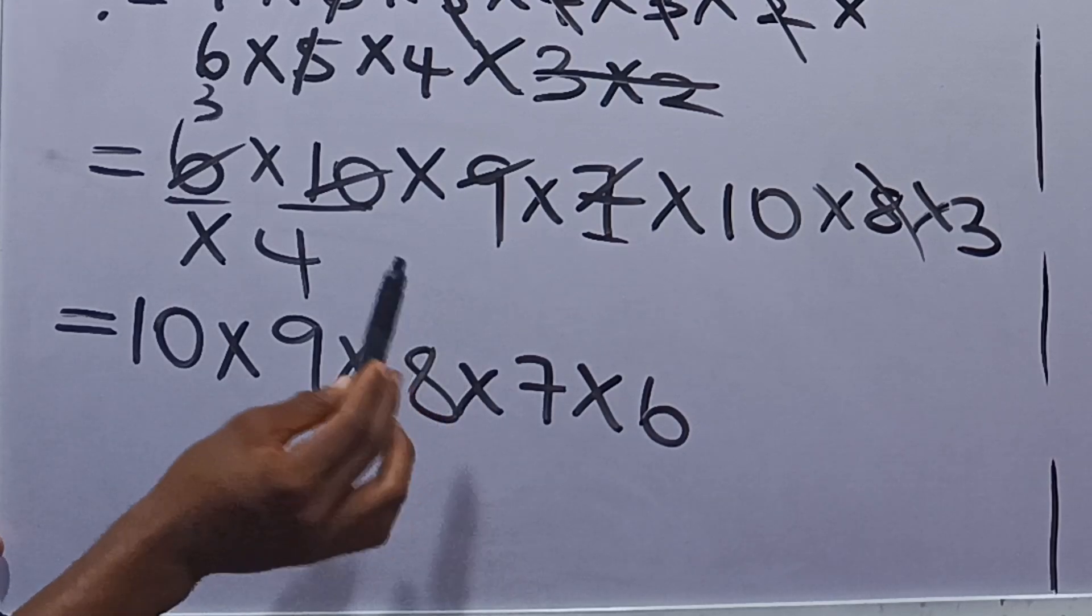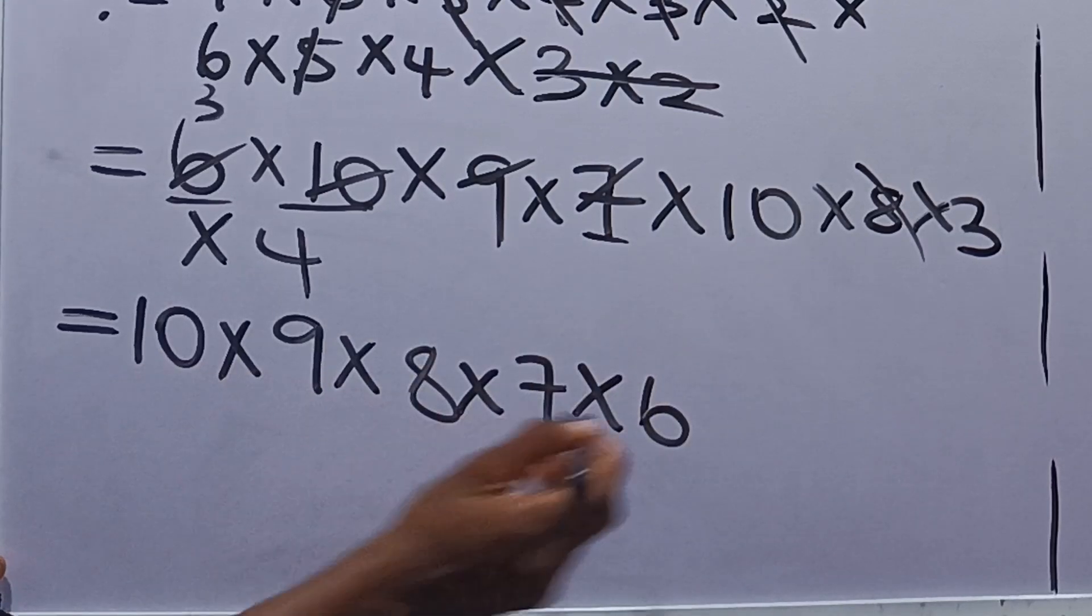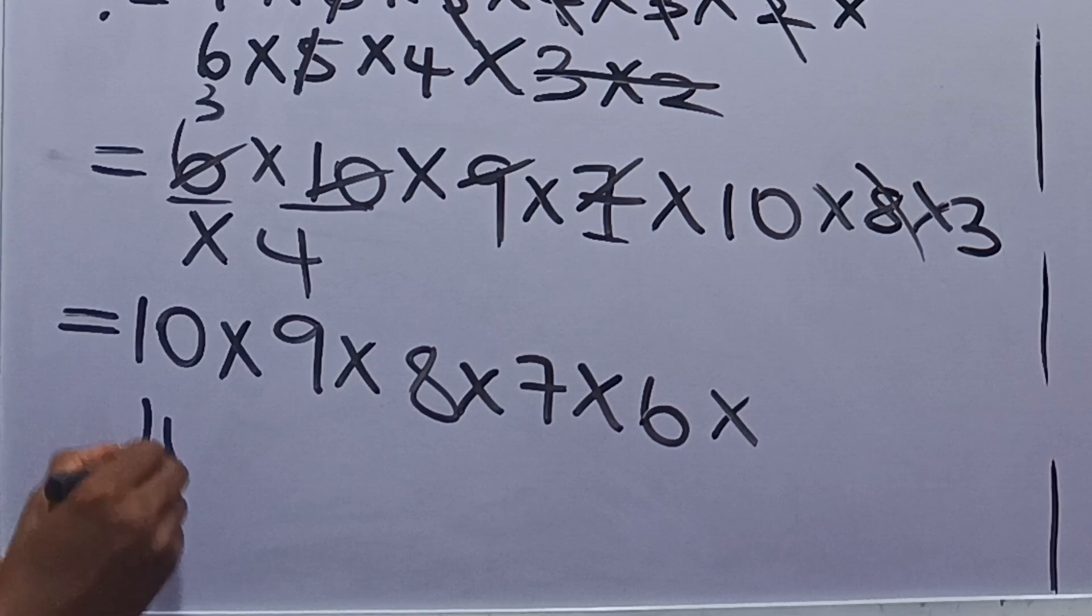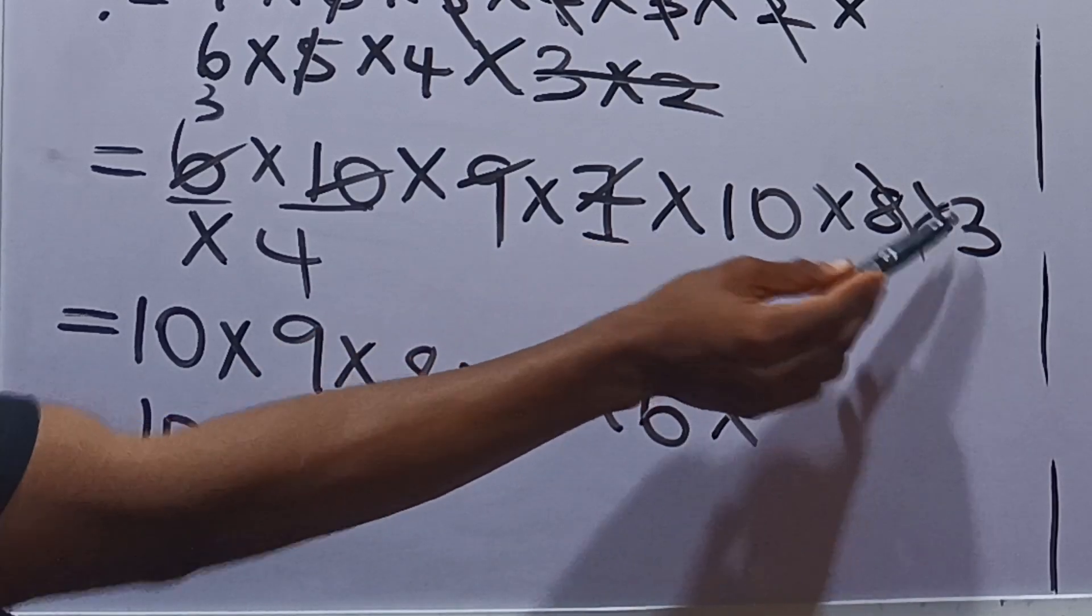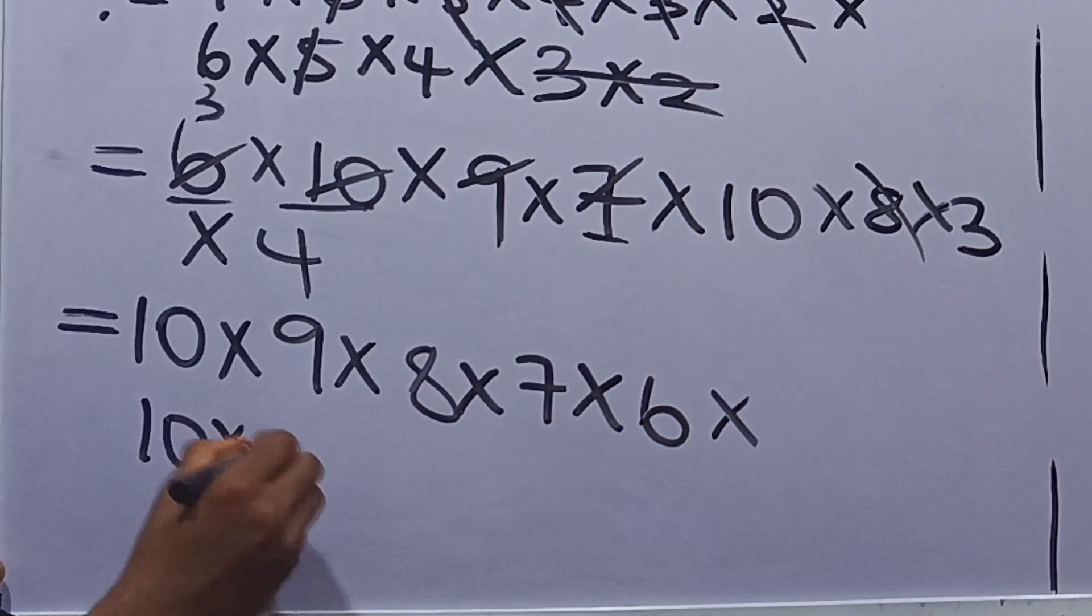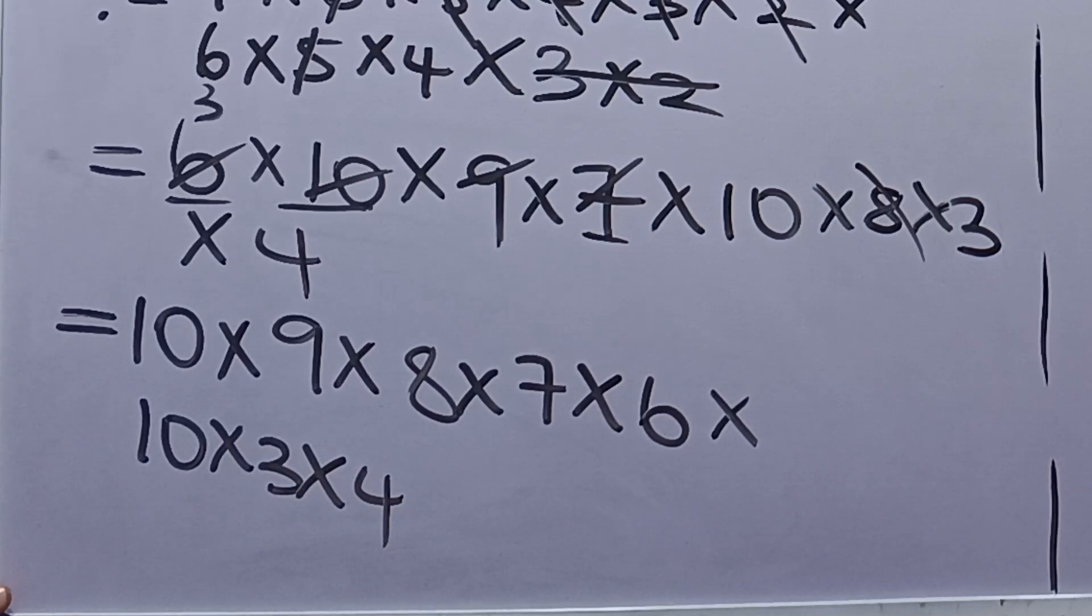So what we are left with is - we have 10, so this is multiplied by 10. Next up, we have 3 here which we've not collected. So we have 3, and we have 4.